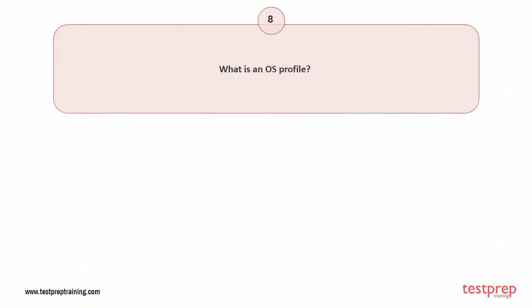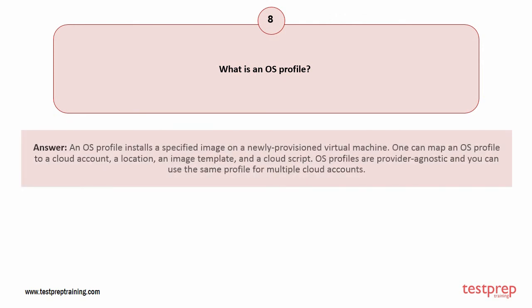Question number 8: What is an OS profile? An OS profile installs a specified image on a newly provisioned virtual machine. One can map an OS profile to a cloud account, a location, an image template, and a cloud script. OS profiles are provider agnostic, and you can use the same profile for multiple cloud accounts.